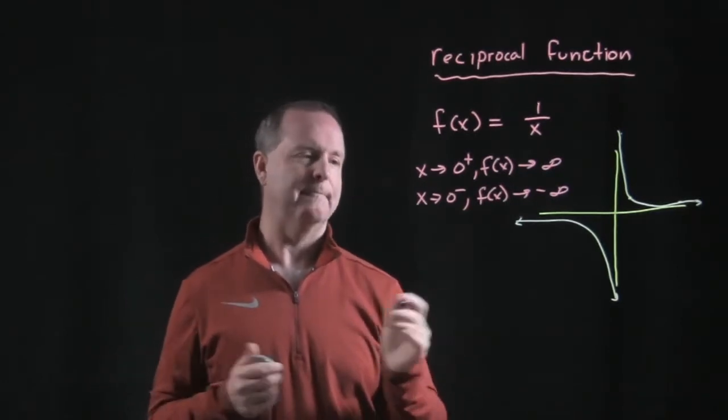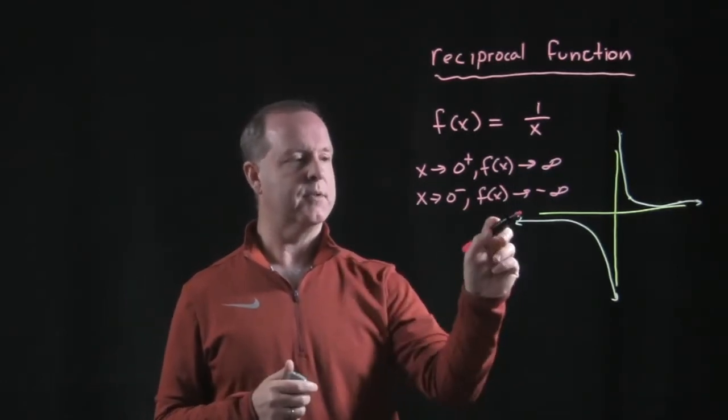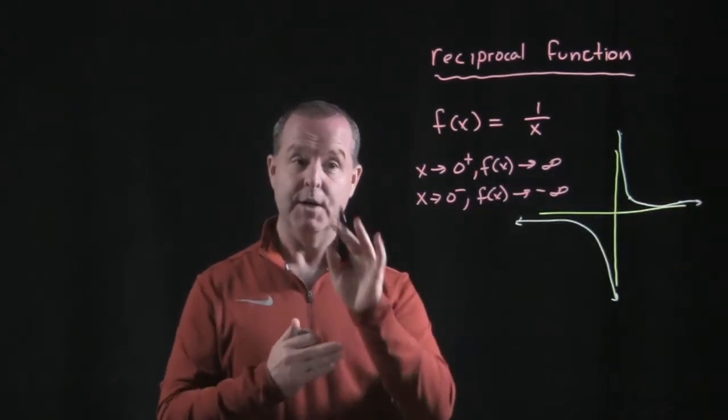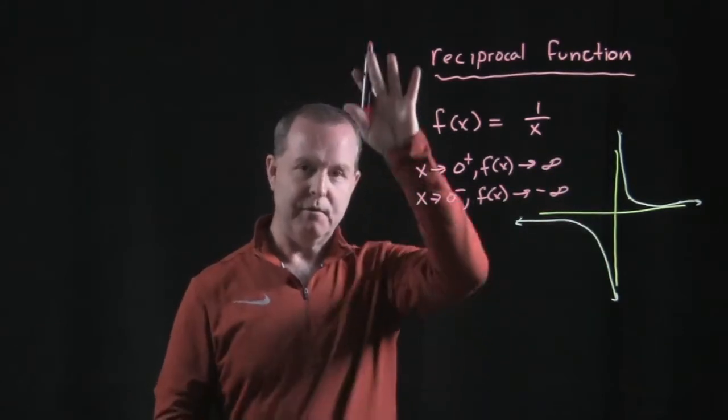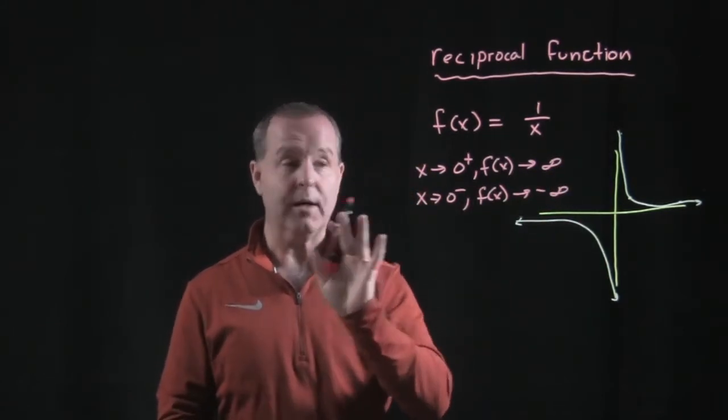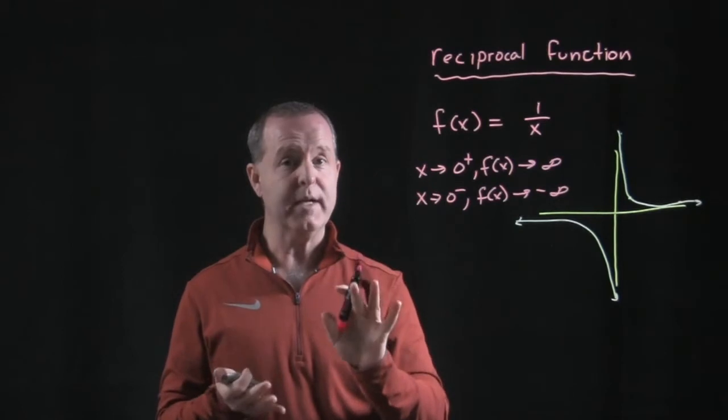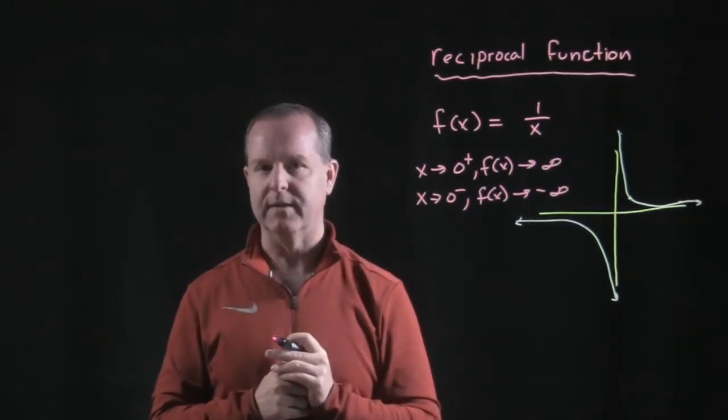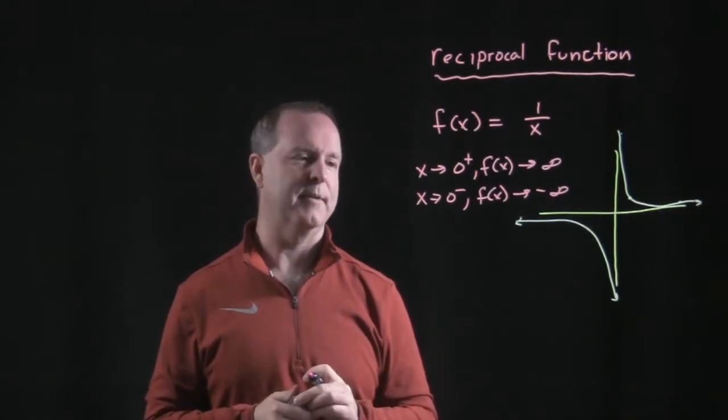A couple of other ways we can look at that. So right now, we're approaching 0 from both sides and looking what happens. Notice what happens at 0? The answers are diverging directly crazily. That's one reason why dividing by 0, it just kind of rips the equation. It splits it apart. All sorts of craziness happens.